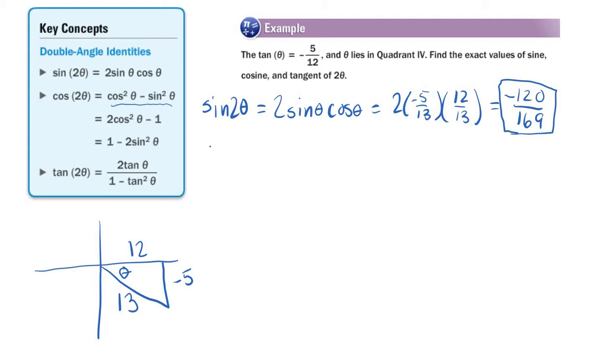So cosine squared theta. Well, cosine squared theta is 12 thirteenths squared, right? Minus sine squared theta. Sine squared was negative 5 thirteenths. So if we multiply that out,